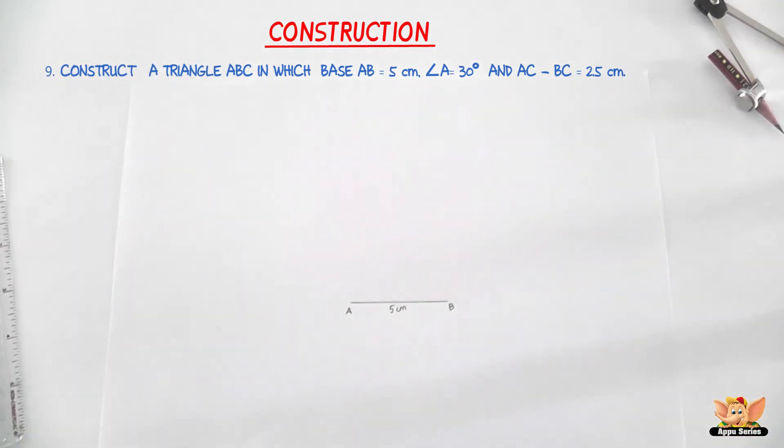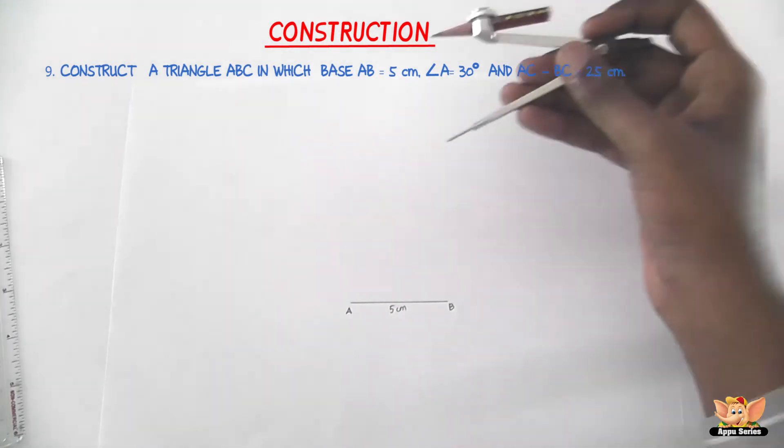The second step is to draw angle BAX equal to 30 degrees. So 30 degrees is exactly half of 60 degrees, so we need to bisect 60 degrees to get 30 degrees. First let us construct an angle of 60 degrees.